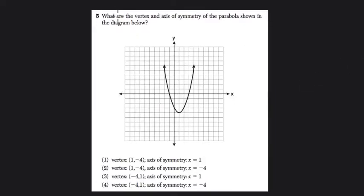Okay, in this question they ask us, what are the vertex and the axis of symmetry of the parabola shown in the diagram below? So in this question, of course, they're showing a parabola, this U-shaped type of curve, and it could be a sideways curve like this, it could be an up and down curve like we're seeing here.